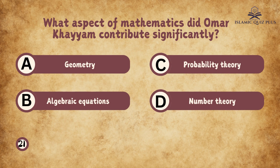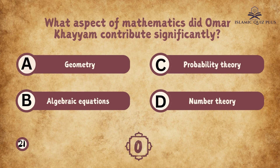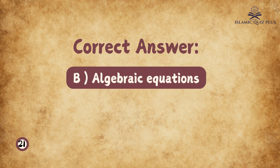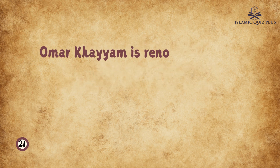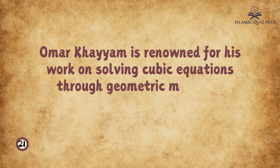Question 21: What aspect of mathematics did Omar Khayyam contribute significantly? A. Geometry, B. Algebraic equations, C. Probability theory, D. Number theory. The correct answer is B. Algebraic equations. Omar Khayyam is renowned for his work on solving cubic equations through geometric methods.